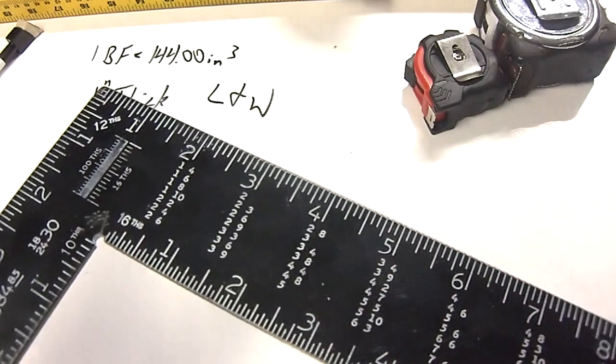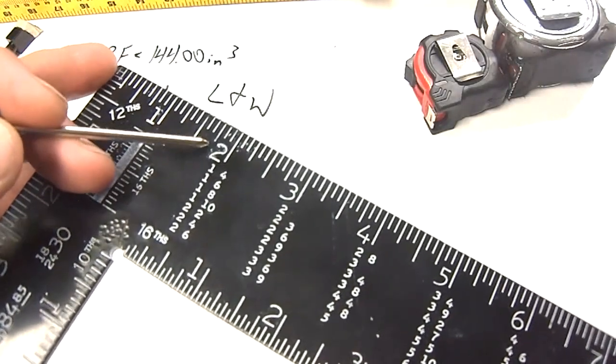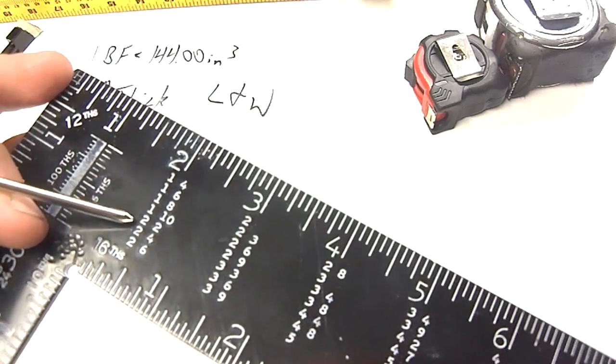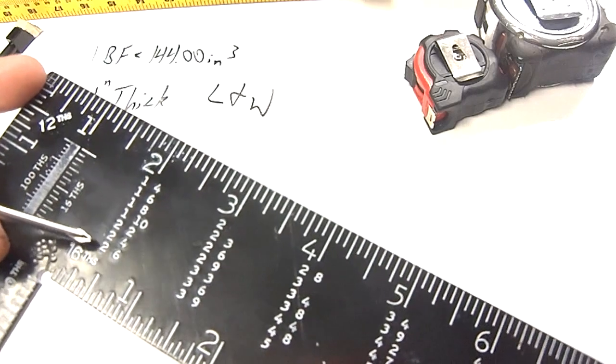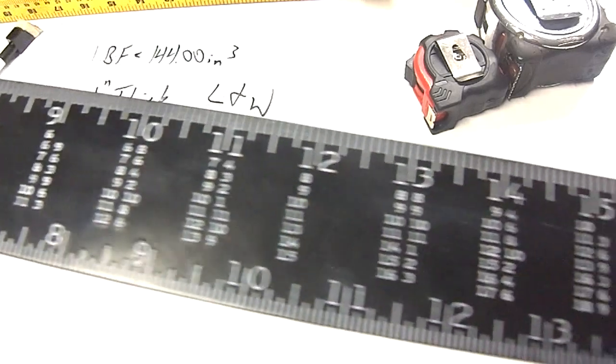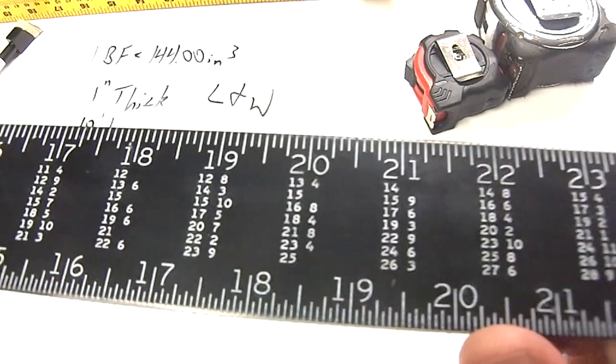If you look at the side of the carpenter square that has these numbers on it, starting right directly under the 2 on the body, has a 1-4, 1-6, 1-8, 1-10, 2-2, 2-4, 2-6, and so on, and you follow it all the way across. This is the board foot scale.